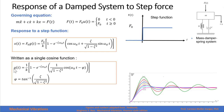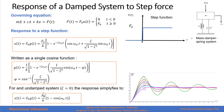We call g(t) the unitary step function, and the response for a step function with magnitude f sub 0 will be f sub 0 times the unitary response. For an undamped system where zeta equals 0, the response simplifies to f sub 0 over k multiplied by 1 minus cosine of omega_n times t.